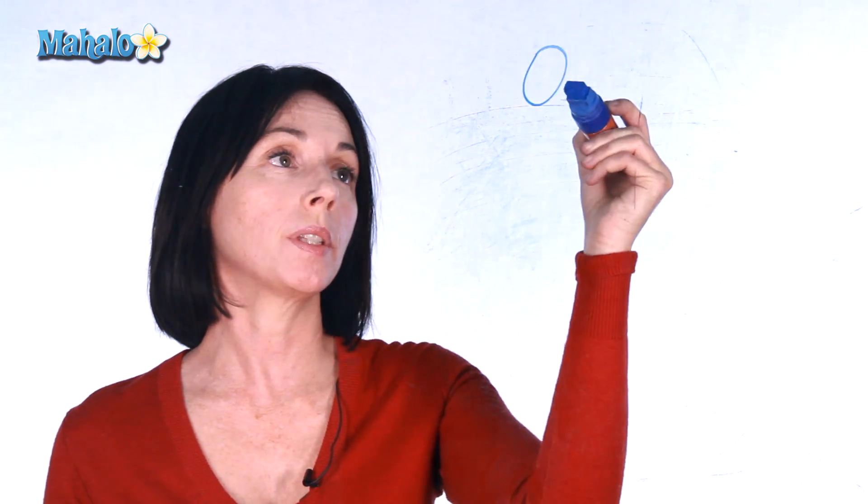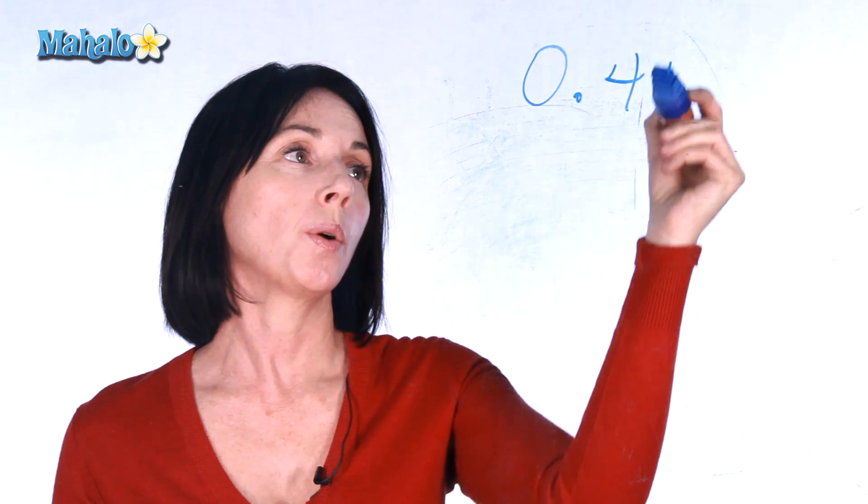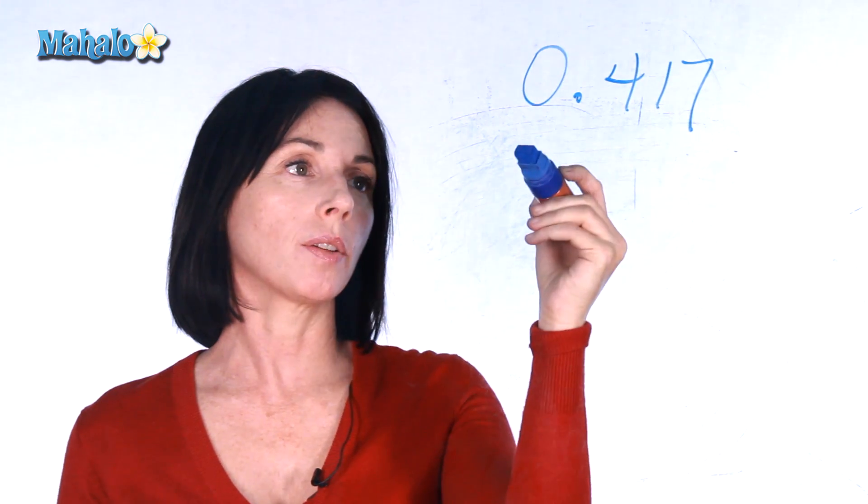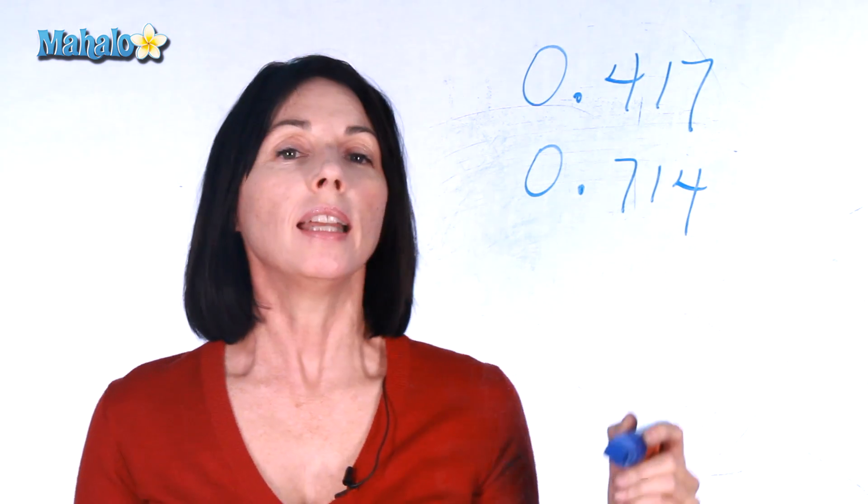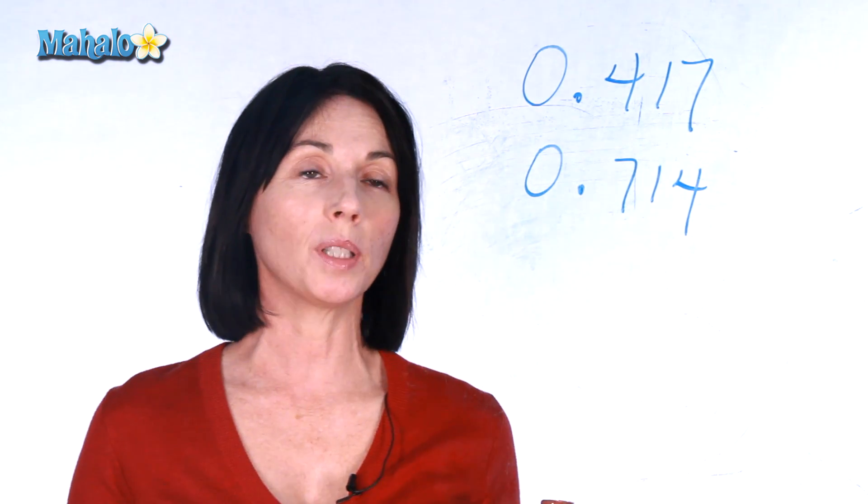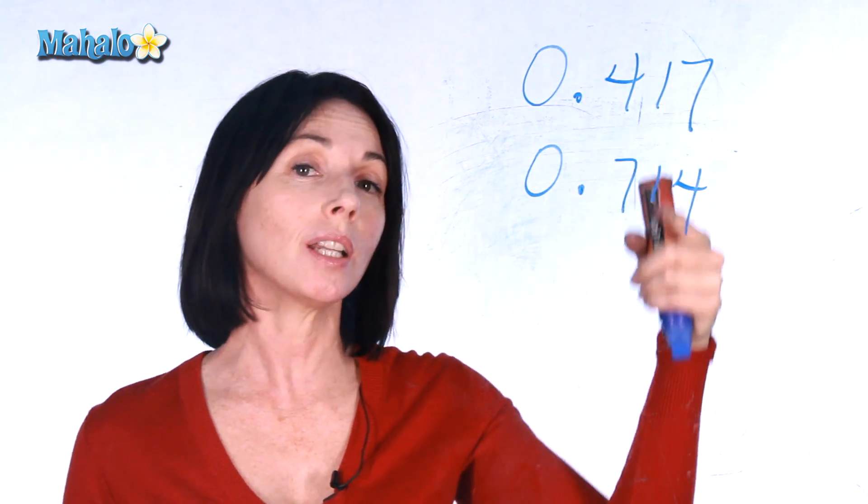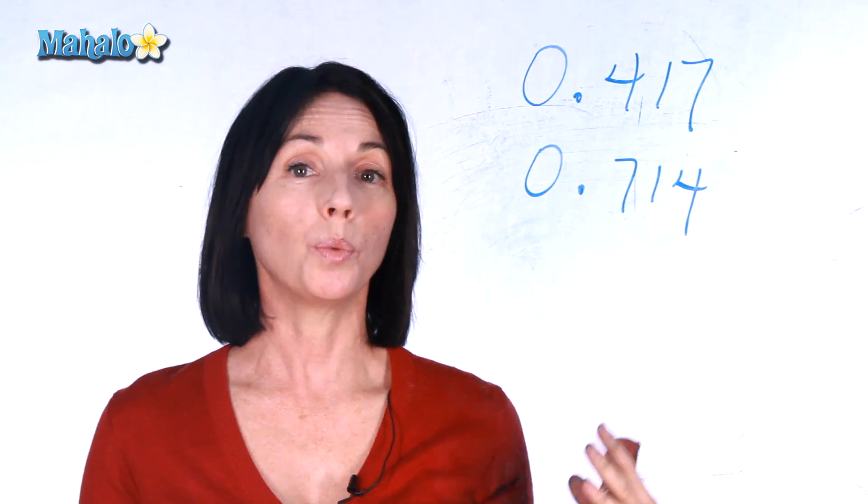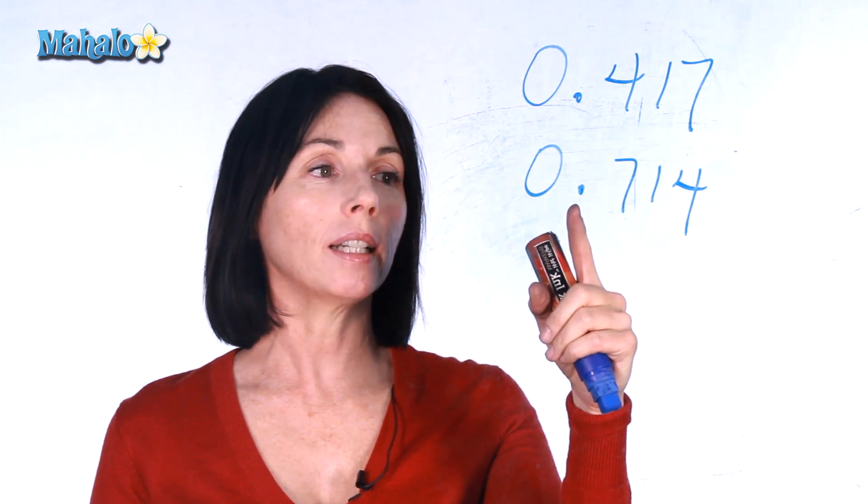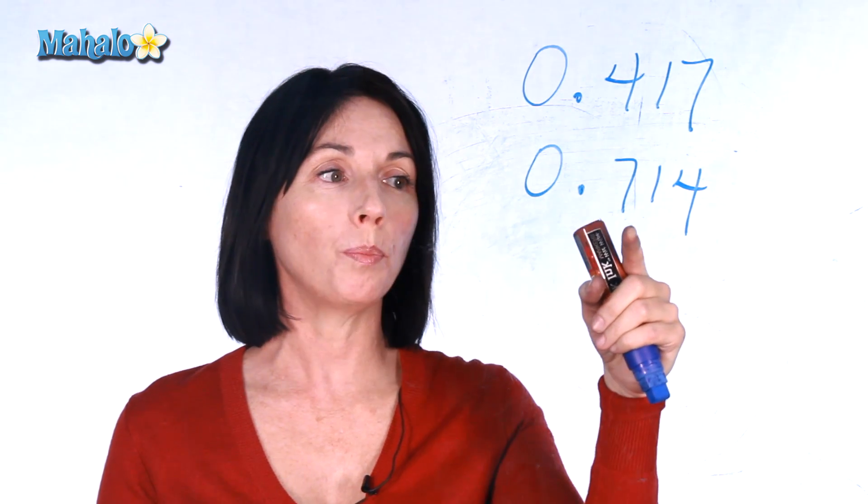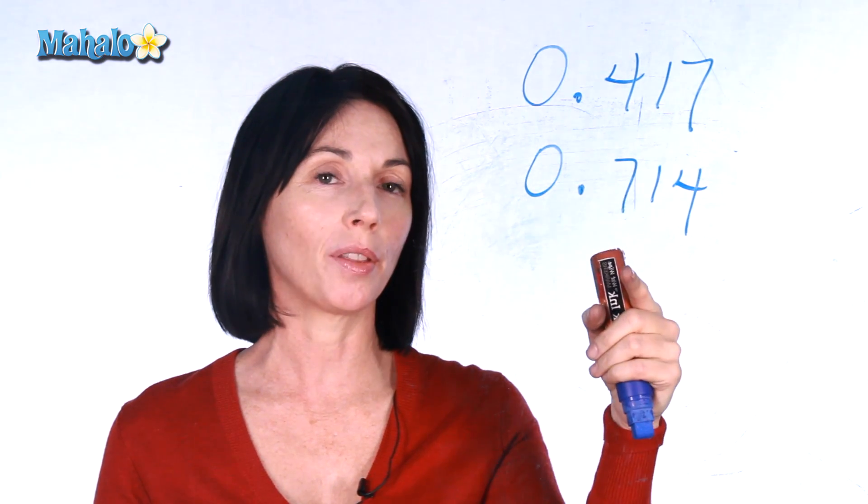Let's say we have the decimal 0.417 and let's say we also have 0.714. Now similar to ordering whole numbers, you have to look at the position of the digits to tell you which number is larger than the other. So in this case we start at the decimal point and we move one place in this direction and compare the numbers.